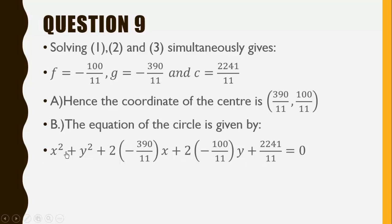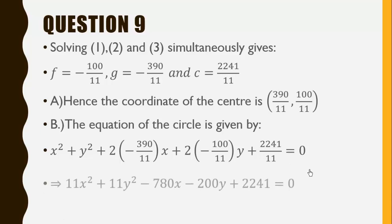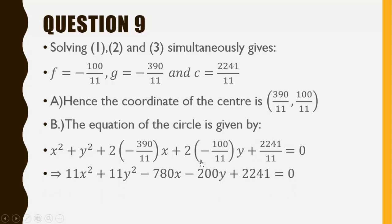Substituting gives us x squared plus y squared plus 2 times (negative 390 over 11) times x plus 2 times (negative 100 over 11) times y plus 2241 over 11 equals zero. Simplifying this, we multiply through by 11 to obtain: 11x squared plus 11y squared minus 780x minus 200y plus 2241 equals zero. This is the equation of the circle.